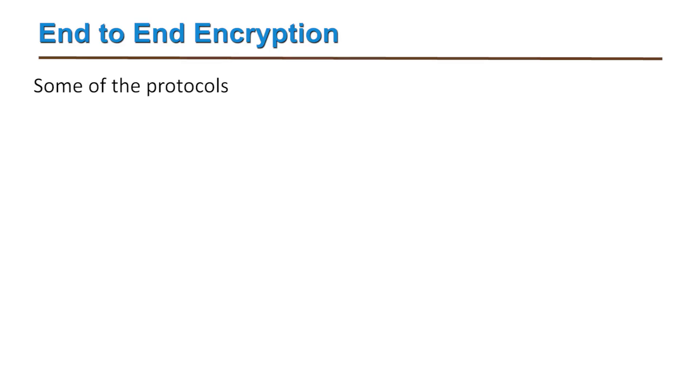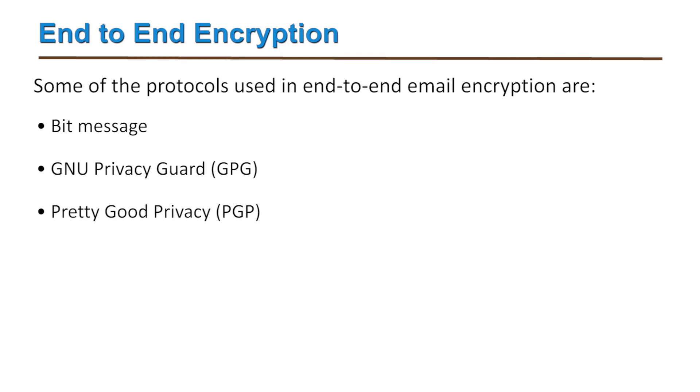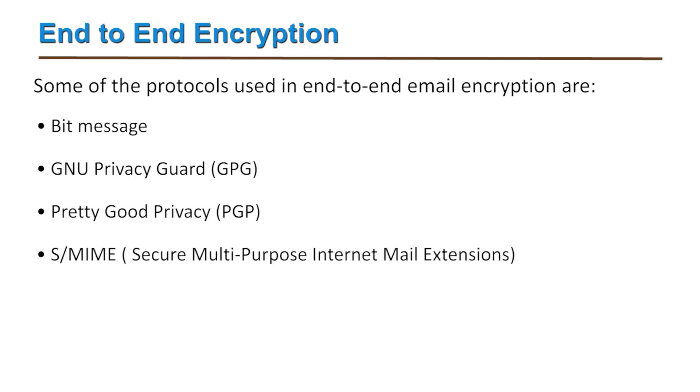Some of the standard protocols used for end-to-end encryption are Bitmessage, GNU Privacy Guard, Pretty Good Privacy (PGP), and S/MIME — that is, Secure Multipurpose Internet Mail Extensions. These are some of the solutions available. We will discuss one particular end-to-end encryption standard, which is Open PGP encryption, and see how it basically works and ensures security.